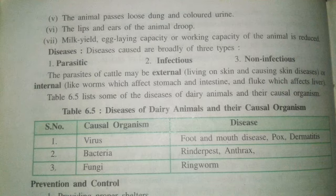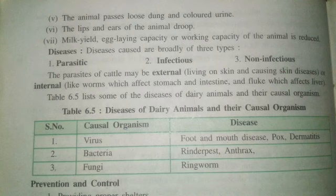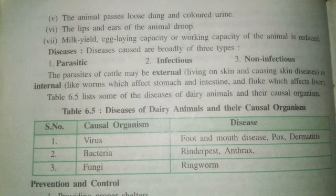So these are the different types of symptoms by which you can detect that your animal is suffering from a disease. Now the next topic is the disease types. The different types of diseases in pet or domesticated animals are: first, parasitic; second, infectious; and third, non-infectious. For parasitic diseases, cattle may have external parasites or internal parasites. External parasites are skin-disease-causing organisms on the outer body surface of the animal.